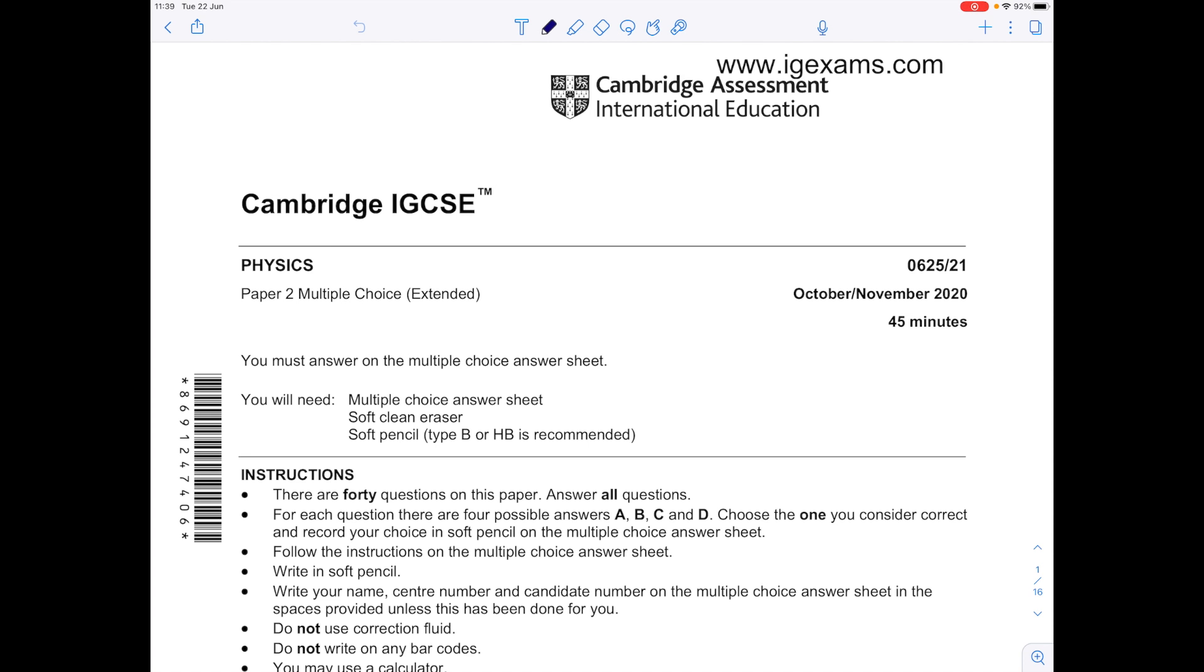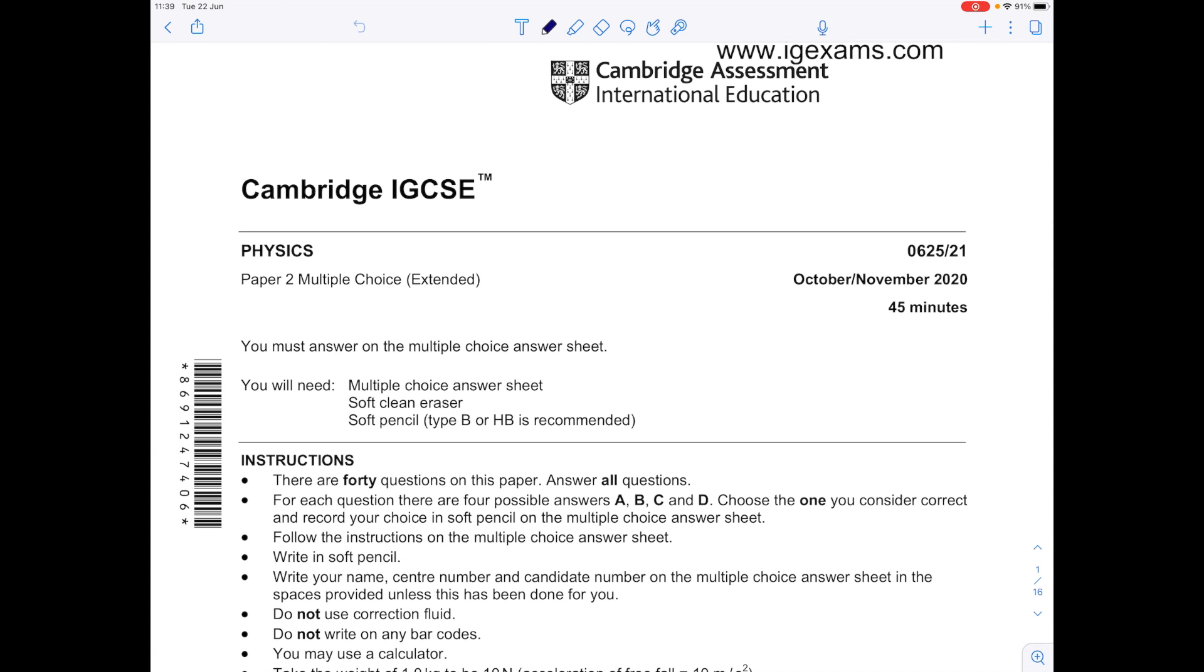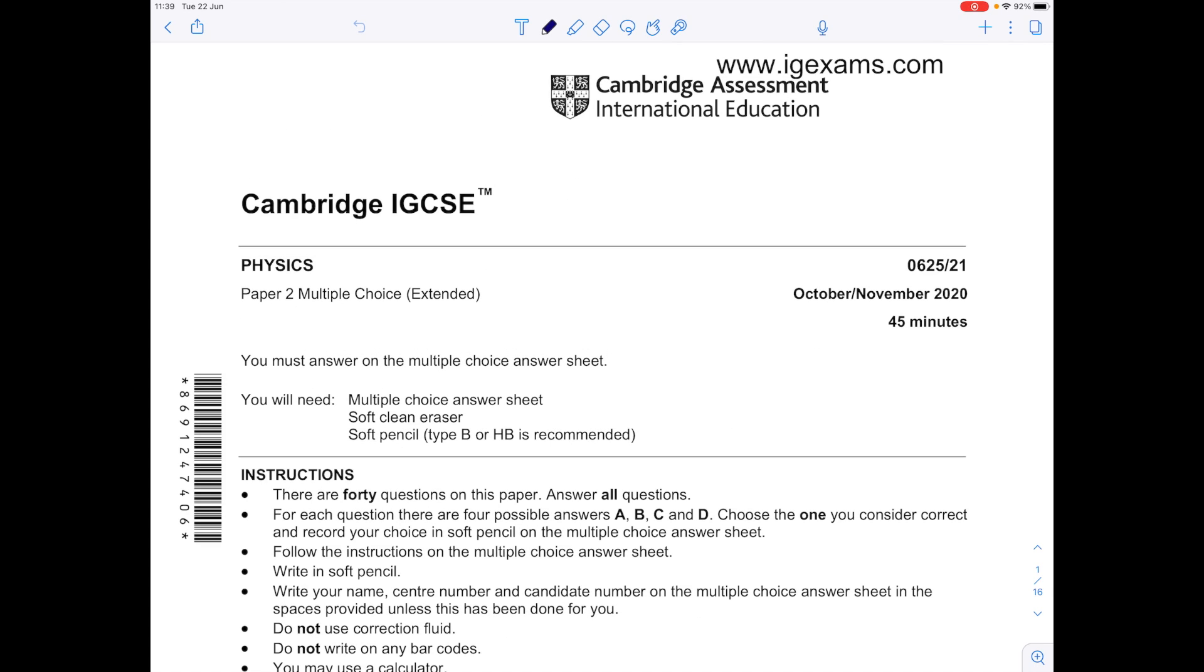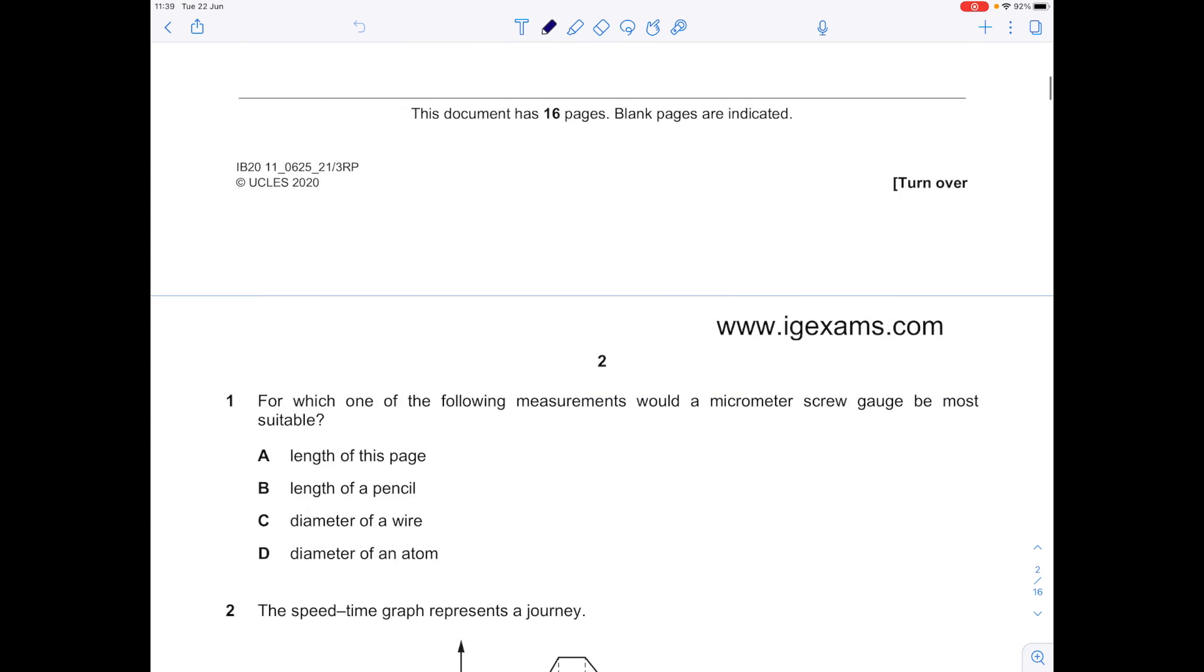Today I'm going to answer the Cambridge IGCSE physics paper, paper 2, multiple choice, and it's the extended one. This is from November 2020. I'm going to do the first 20 questions, explaining to you how I arrive at each answer.